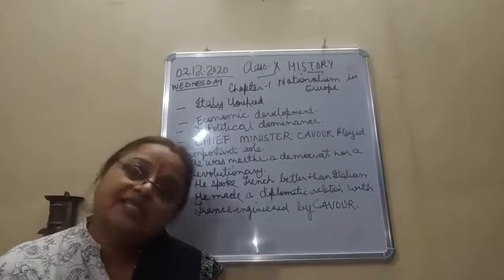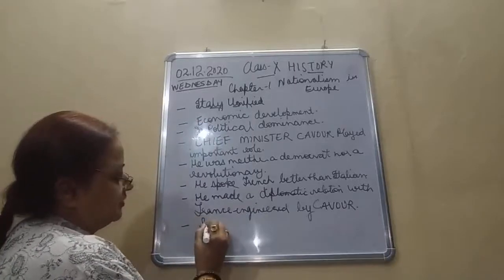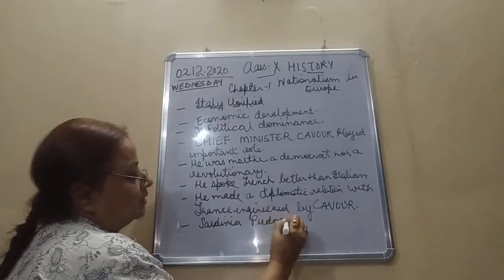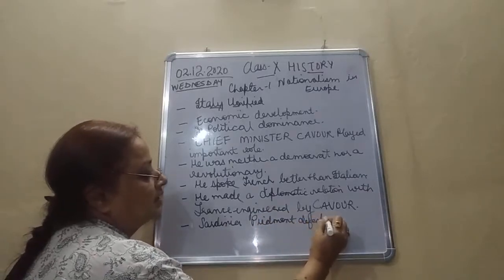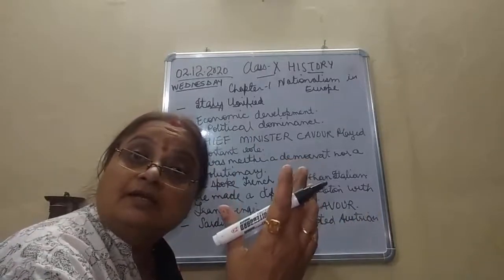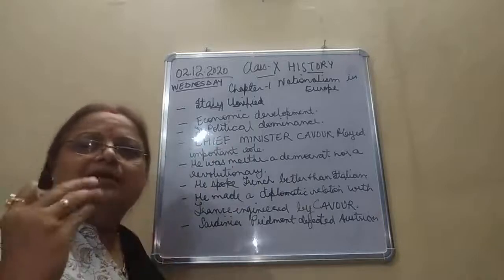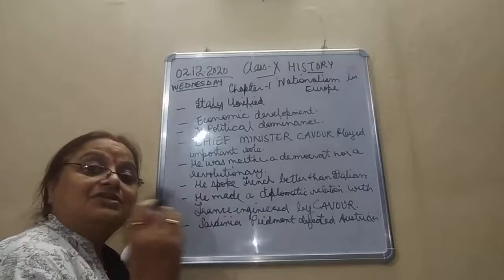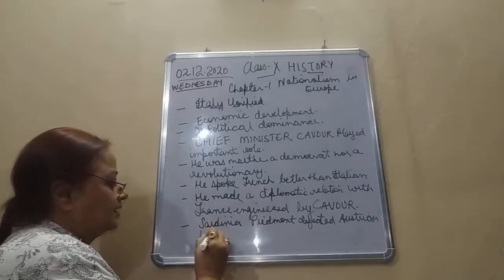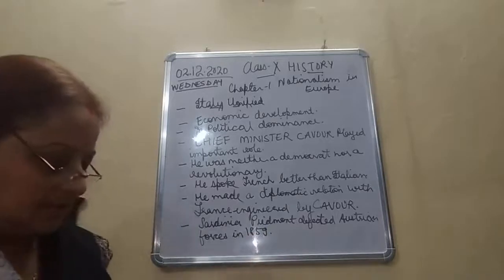Sardinia-Piedmont successfully defeated the Austrian forces in 1859. Austria had the audacity to attack other countries and tried to capture them, but they were defeated by Sardinia-Piedmont in the first war.